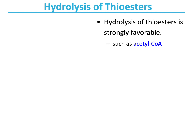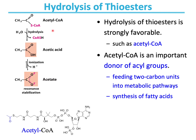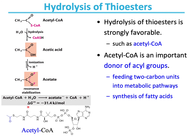Hydrolysis of thioesters is strongly favorable. For example, hydrolysis of acetyl-CoA is a favorable process. Acetyl-CoA contains a CoA molecule — Coenzyme A — which has a thiol that serves as the carrier of acetyl groups. Acetyl-CoA is an important donor of acetyl groups, feeding two-carbon units into metabolic pathways, with one of the most important functions being the synthesis of fatty acids. Acetyl-CoA hydrolyzes to acetic acid, which ionizes to form acetate stabilized by resonance, giving a standard free energy of minus 31.4 kJ per mole.